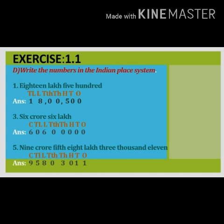Division D: write the numbers in the Indian place value system. First question: eighteen lakhs, five hundred. Write the place values — ones, tens, hundreds, thousands, ten thousands, lakhs, ten lakhs. Children, read the question twice — some periods are not given, so to avoid mistakes write the place value and below that write the numbers. Eighteen lakhs in the lakhs period, thousands period write zero, and ones period is five hundred.